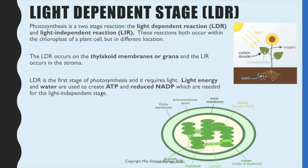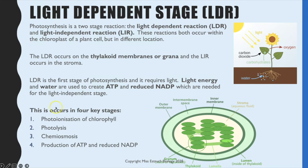The light dependent reactions are the first stage of photosynthesis and they're called this because they require light energy. That light energy and also water, one of the reactants in photosynthesis, are used to ultimately create ATP and reduced NADP, and these two molecules are needed for the light independent stage.